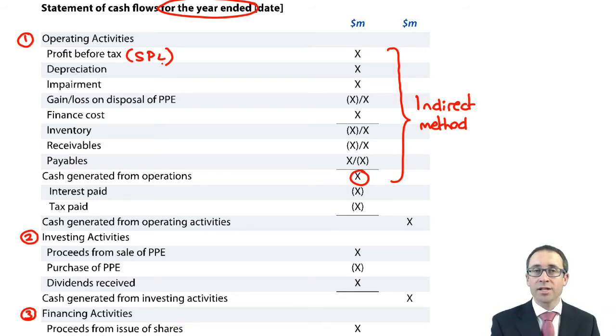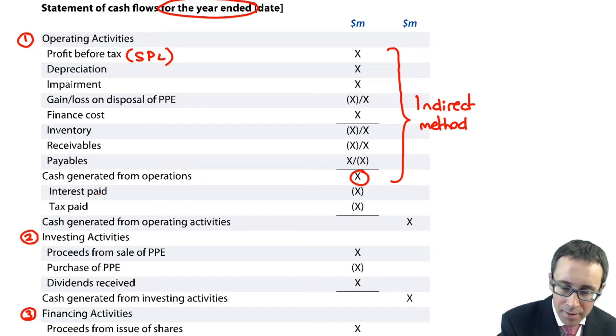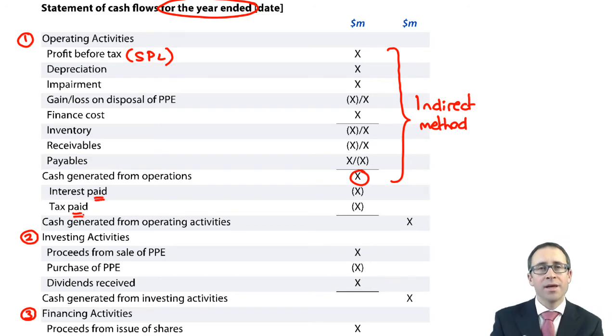You've then got your interest paid and tax paid. Remember, they are cash payments, they are outflows. It's not necessarily what the expense figure is within profit or loss. You need to adjust that based upon accruals, opening and closing, to work out the cash figure. If you see positive numbers, that's an inflow. If you see negative numbers, that's an outflow.